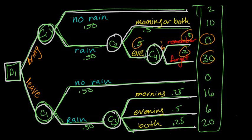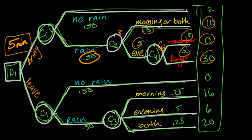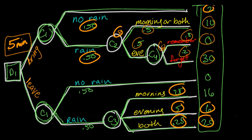Continuing the fold-back: 0.5 times 6 plus 0.5 times 10 gives us 3 plus 5, which is 8. So the expected value of minutes lost if it rains is 8. Then 50% of 8 plus 50% of 2 gives us 4 plus 1, which is 5 minutes. Similarly, down the other path: a quarter of 20 is 5, half of 6 is 3, a quarter of 16 is 4 — that's 12 total, and half of 12 plus half of 0 is 6.